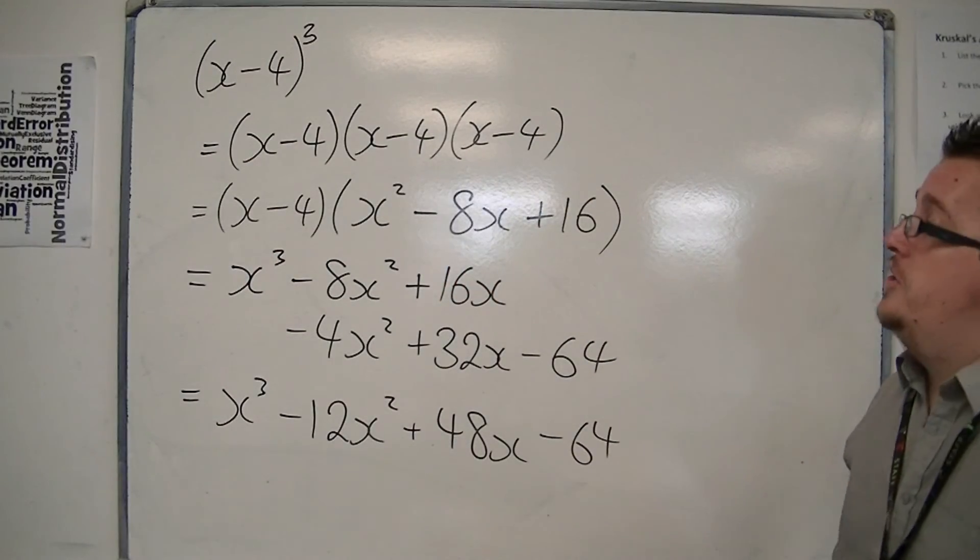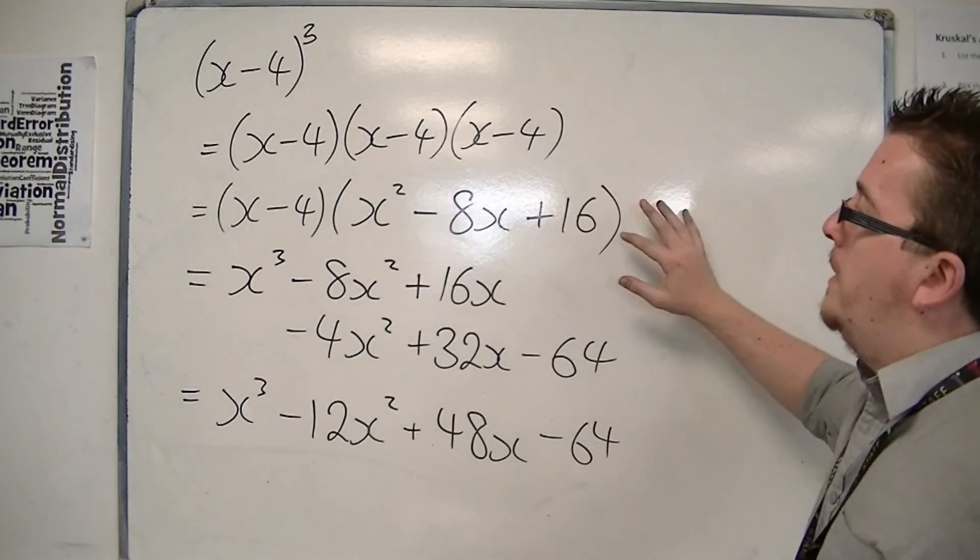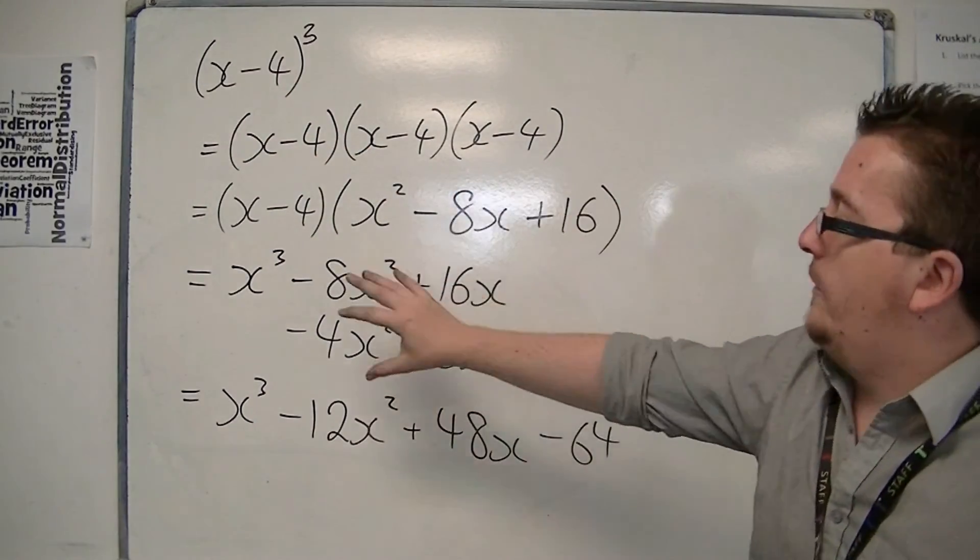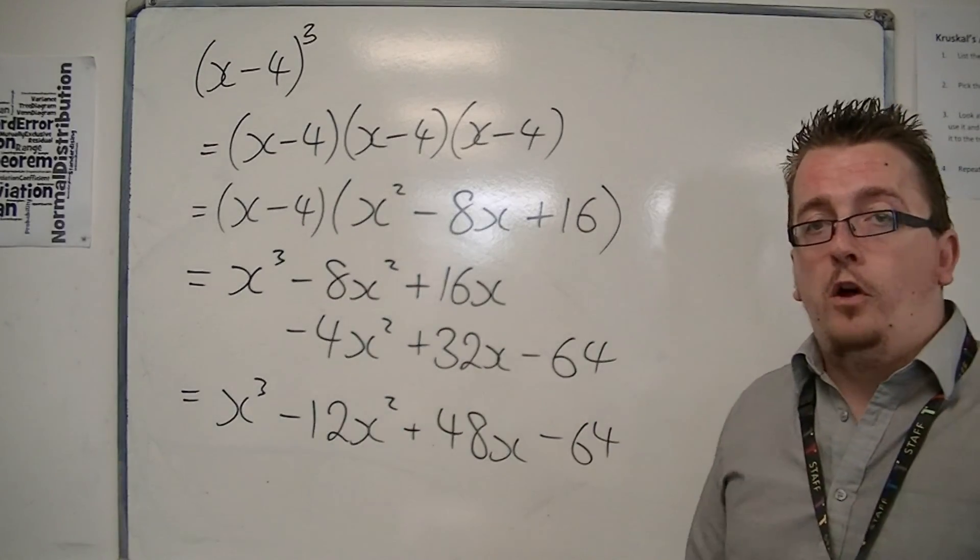So the stages that I would suggest to you is leave the first one alone, multiply out the other two, and then expand, setting it out in a similar way to this, and it makes your life a lot easier.